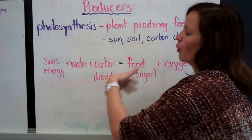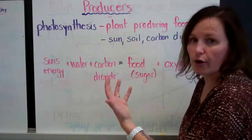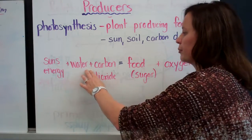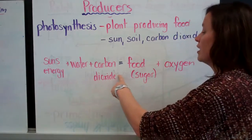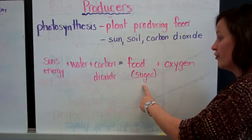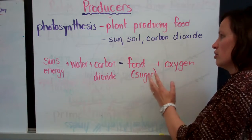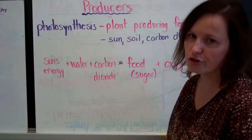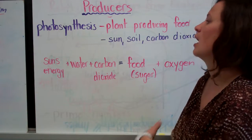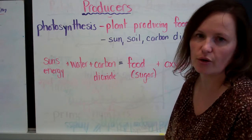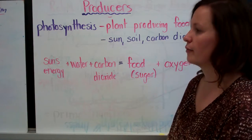So we want to write it as a word equation: sun's energy plus water plus carbon dioxide equals food and oxygen. Oxygen is also a product of a plant producing its own food.